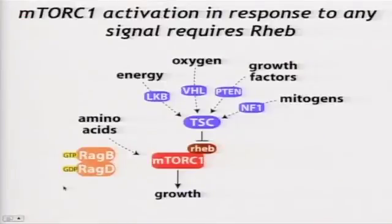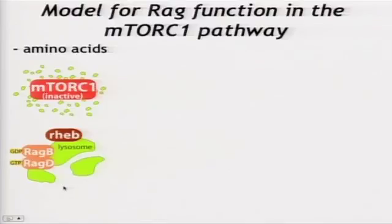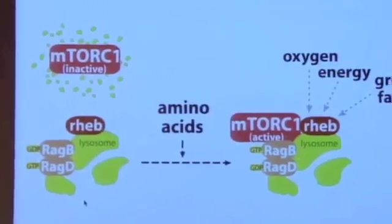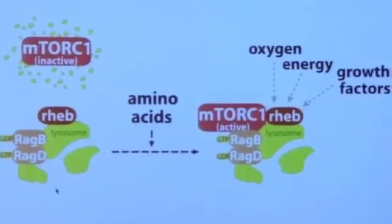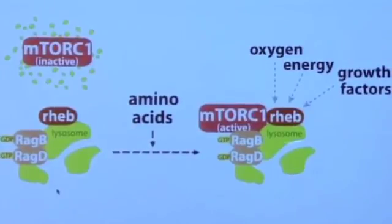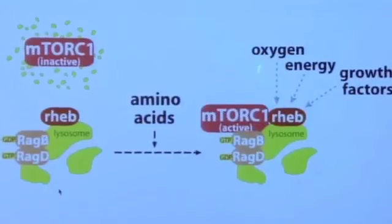RHEB is also part of the endomembrane system and on endosomes and lysosomes. So we proposed a model: when there are no amino acids, RHEB and the RAGs are on the lysosomal surface but mTORC1 is in some other unknown compartment. When amino acids are added, mTORC1 translocates using the RAGs as a docking site and can then encounter its activator, RHEB. This is essentially an AND gate — you need amino acids to put mTORC1 next to RHEB, but you also need all the other inputs for RHEB to be GTP-loaded.